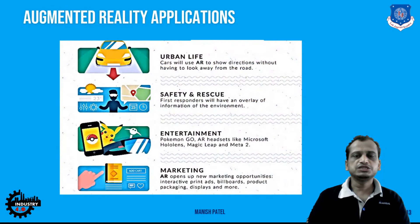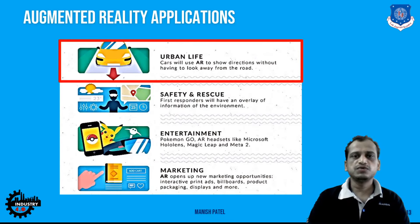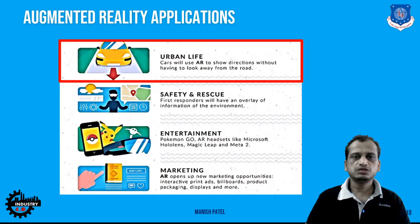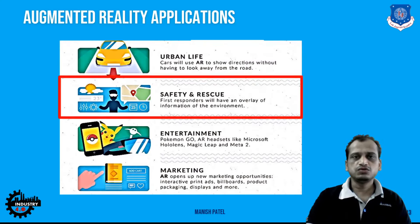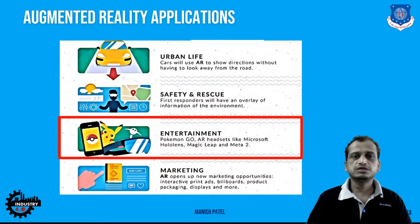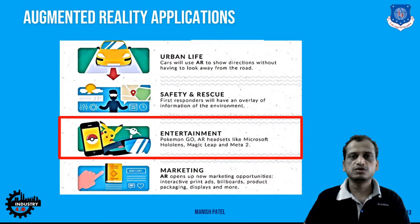Let's look into the applications of augmented reality. In urban and automotive areas, AR is used in car manufacturing — on dashboards — to get real-time information about traffic and congestion. For rescue operations, first responders can make informed decisions and get more information with the help of augmented reality.